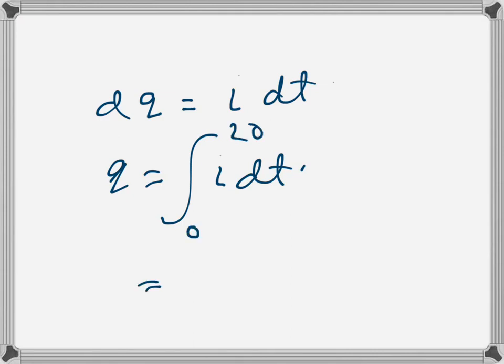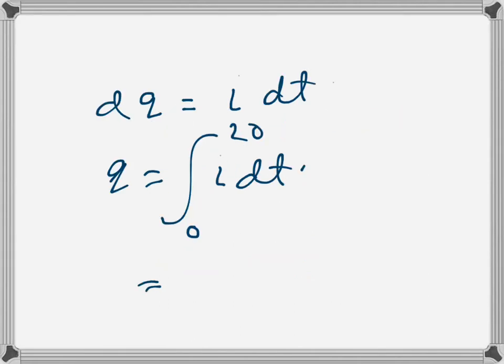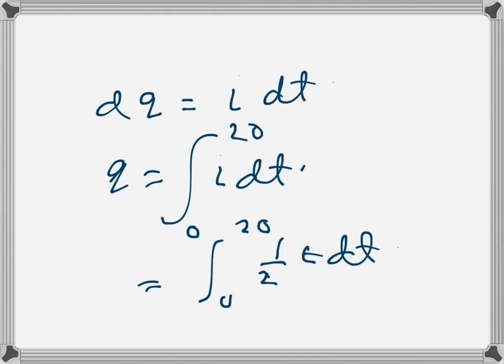Now we have i in terms of t, so we can write the integral from 0 to 20 of half of t dt. We have to solve this integration, so it becomes half, we can take that out, so it will be half and then t square over 2.